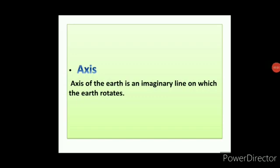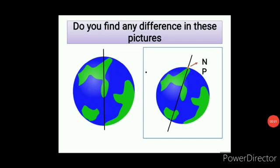Our next topic is axis. The axis of the earth is an imaginary line on which the earth rotates. Do you find any difference in these pictures? Both pictures have a black line called the axis of the earth. In the first picture, the axis is straight, and in the second picture, the axis is slightly tilted or inclined. In reality, the axis of the earth is tilted to 23 and a half degrees.